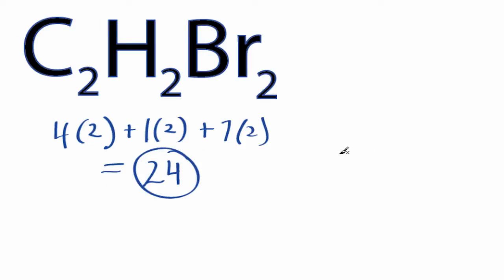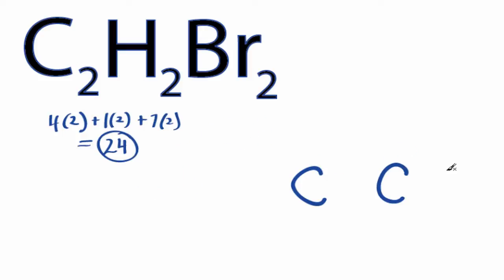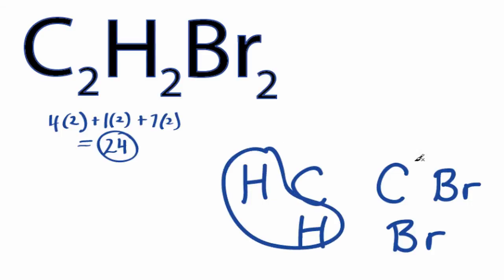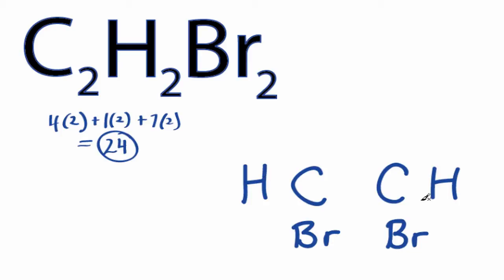Carbon's the least electronegative, so we'll put the carbons right in the center. The question is, how do we distribute the hydrogens and the bromines? We could do it this way, where we have the hydrogens on this side and the bromines over here, or we could mix it up with a hydrogen here and a bromine here, and then a hydrogen here and a bromine here.